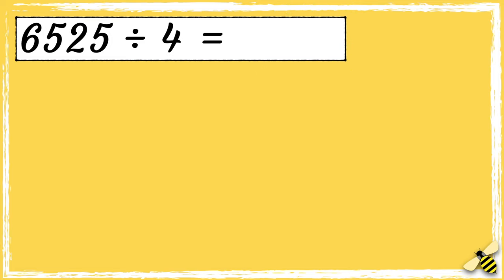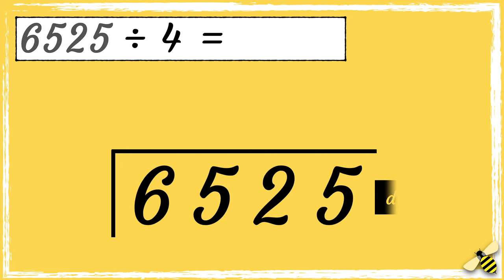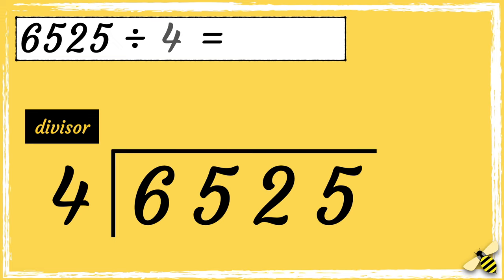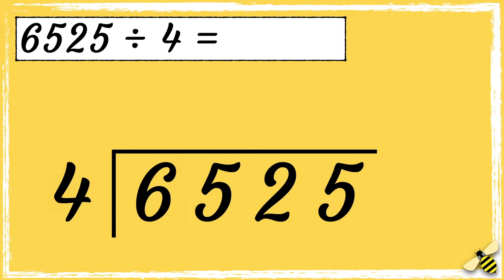Let's have a look at another example: 6525 divided by 4. First we need to draw our bus stop. We put the number that we're dividing — the dividend — inside the bus stop, and we put the number we're dividing it by — the divisor — next to the bus stop. What we need to do is find out how many times our divisor fits into these numbers.